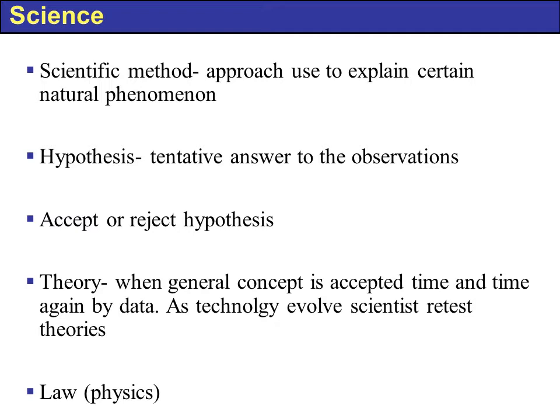The scientific method is an approach used to explain certain natural phenomena. We have another term called a hypothesis — a tentative answer to the observations that were made in nature, in the wild. So I observe something, I come up with an answer to the observations, and then I have to design an experiment to test my hypothesis. That is the scientific method.